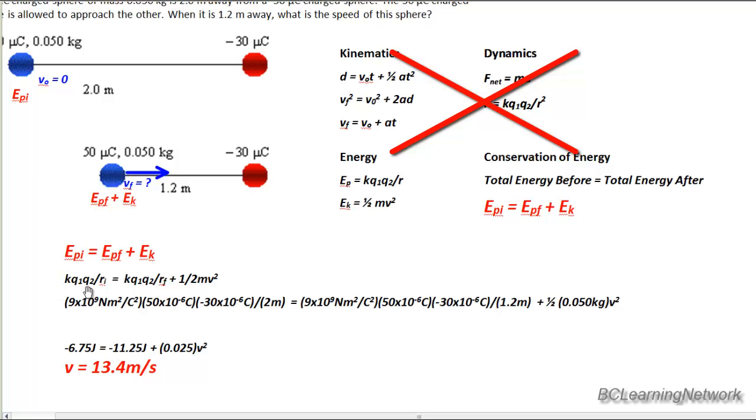So we see our formula, kQ1 q2 over r initial, is 9 times 10 to the 9 times 50 times 10 to the negative 6 times negative 30 times 10 to the negative 6, all divided by 2, equals kQ1 q2 over r final. So r final would be 1.2 meters plus 1 half mv squared, which is our kinetic energy. And when you work out the numbers, you get the following, with our final velocity being 13.4 meters per second.